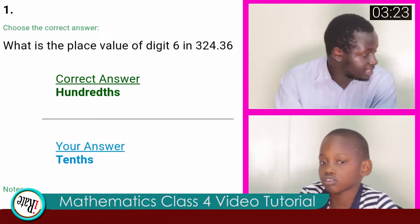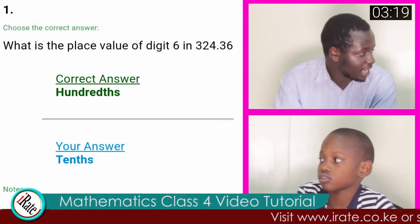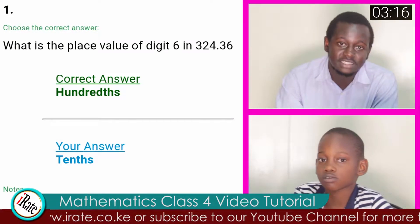You see, after the decimal point, we do not start with ones. We start with tenths and then we go to hundredths and then thousandths. So the correct answer is hundredths.